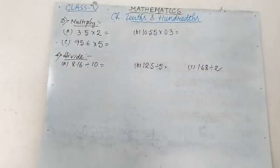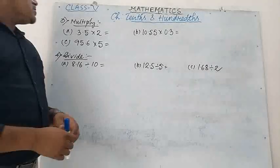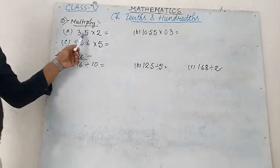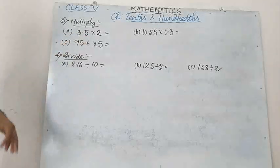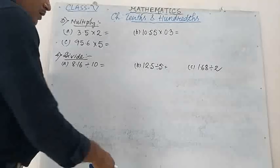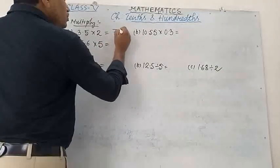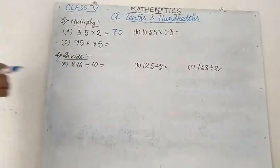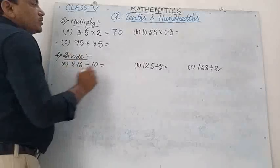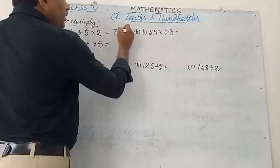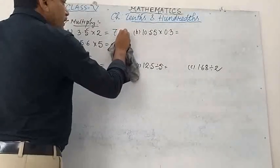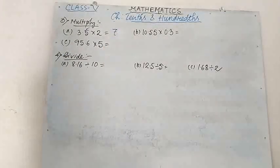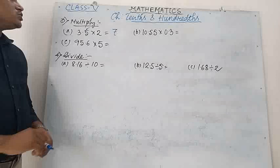Now Number 3, multiply. Number A: 3.5 into 2. If the point is not there, the number is 35. So 35 into 2 equals 70. Now, how many digits are there after the point? Only one digit. So the point will be placed to give 7.0, which you can write as just 7. So 3.5 multiplied by 2 equals 7.